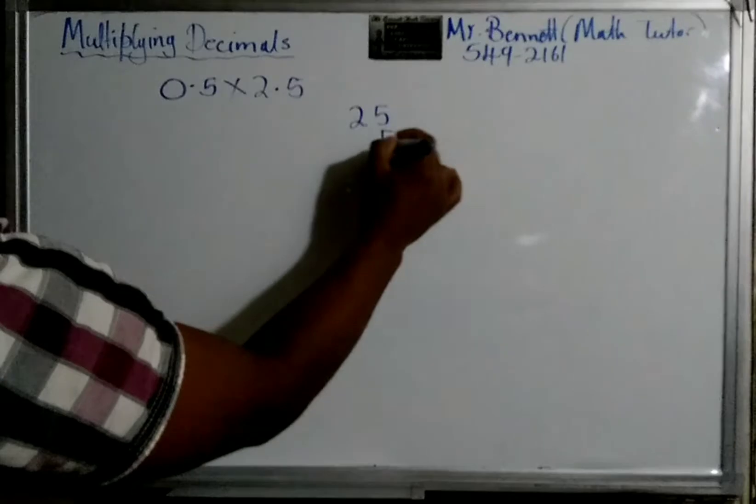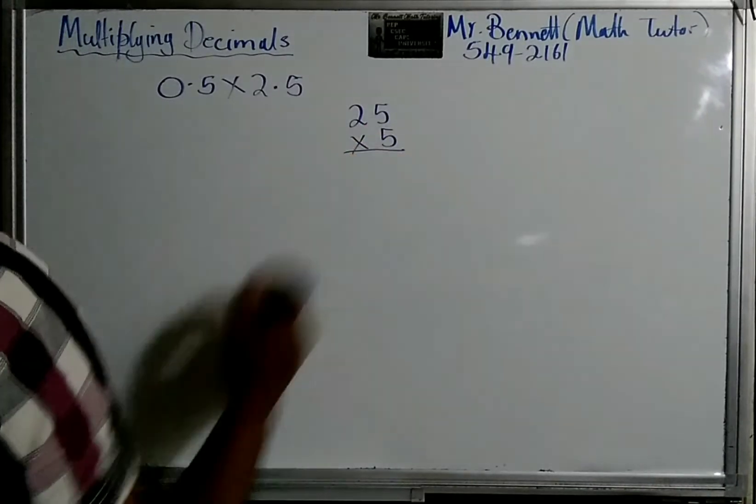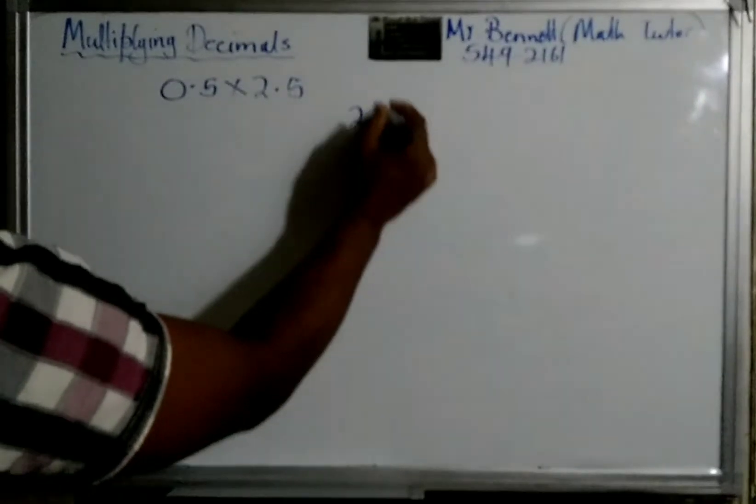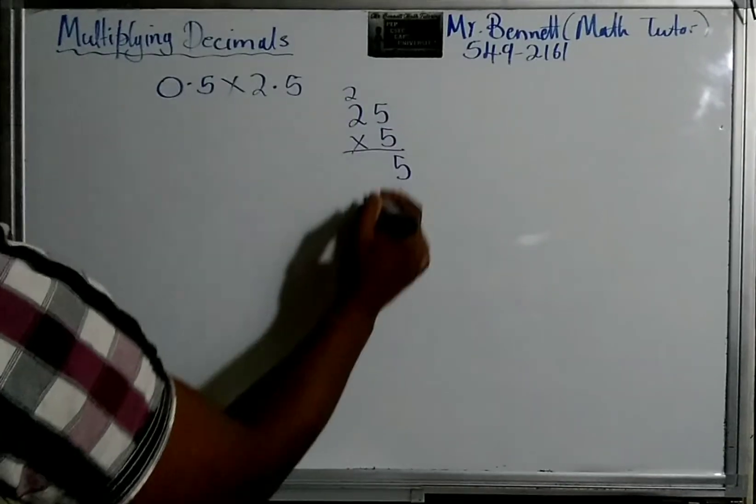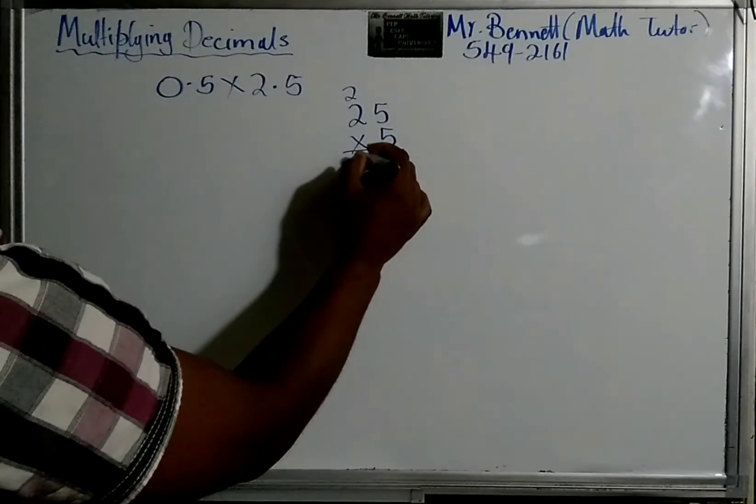For example, we multiply 25 times 5. So we're going to take the whole number apart. So, 5, 5, 25. 5, 2, 10. And that's 125.